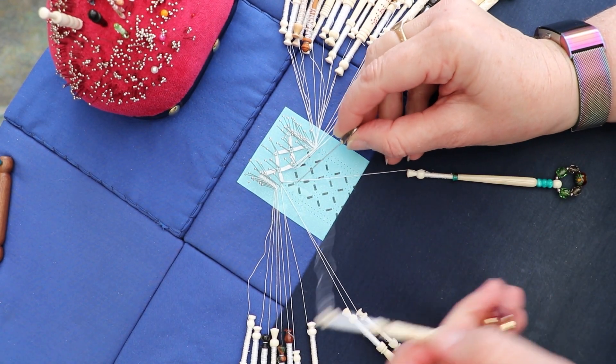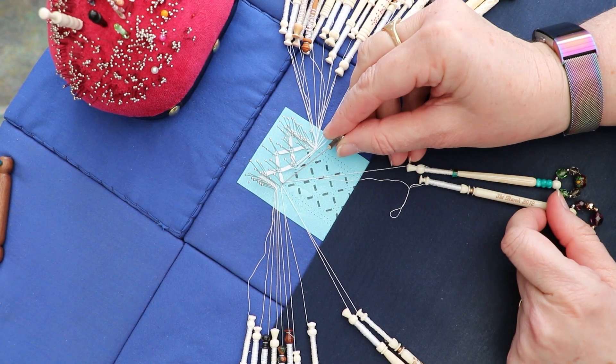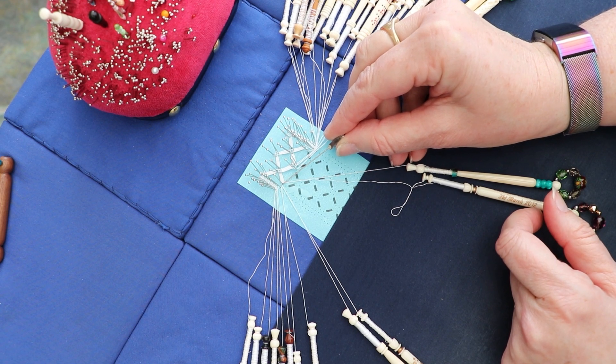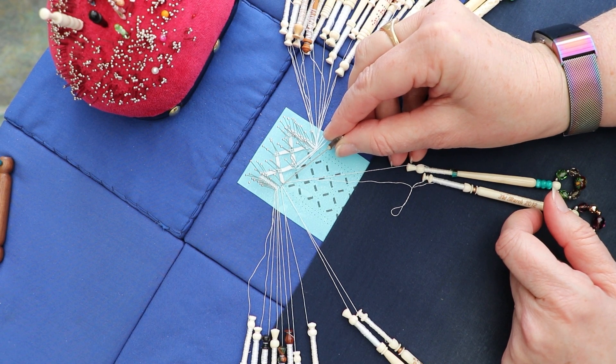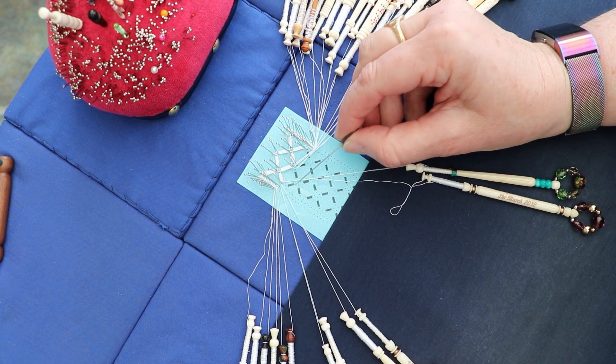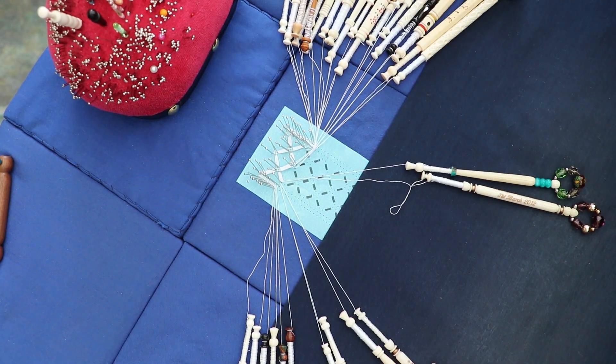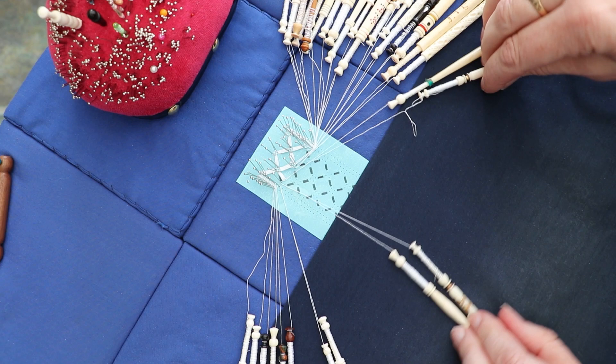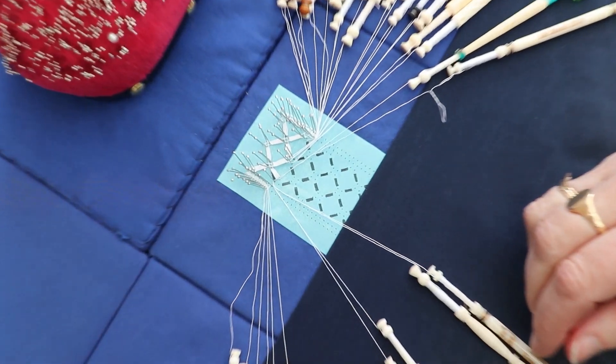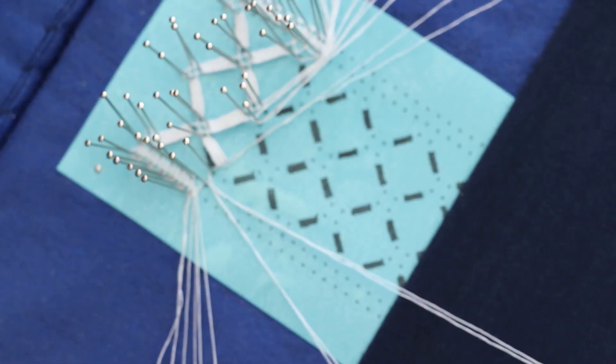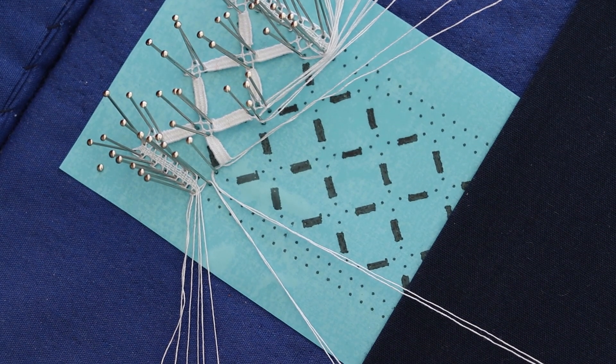I've now worked the tally to join in with the edge. And I've put the first pin in ready to do the edge join. Again I've left the worker long. I started on the left hand side of the tally, so it finishes on the outside edge away from where the first join is going to be.